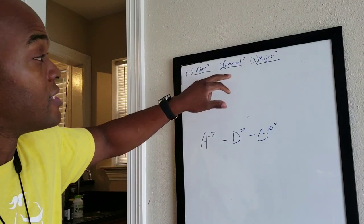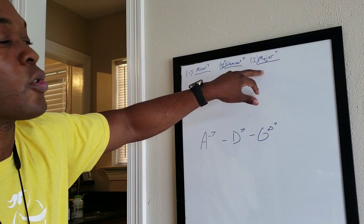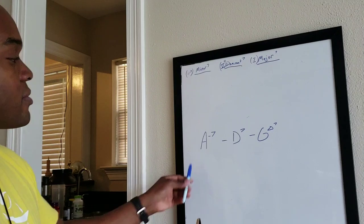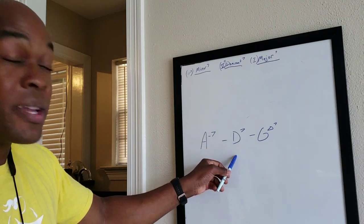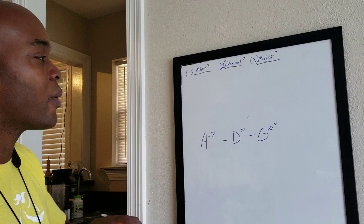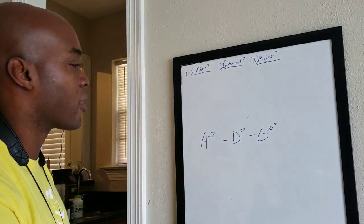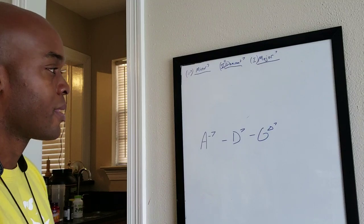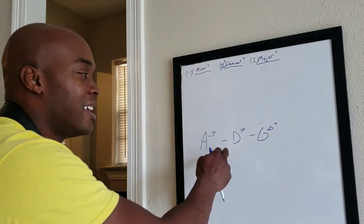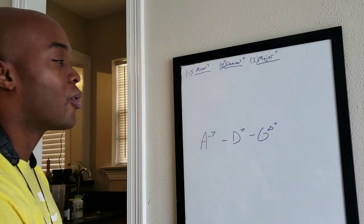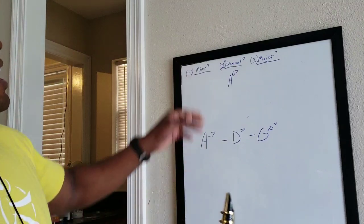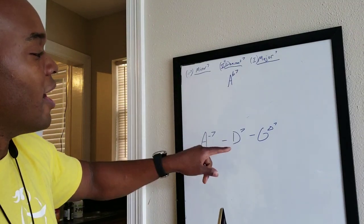I have it written up here on the board: a minor seven chord going to a dominant seven going to a major seven chord. Here it's written in the key of G — A minor seven going to D dominant seven going to G major seven. The most common substitution, which a lot of you probably already know, is the tritone substitution. All it means is you go from the dominant chord to a chord a tritone above — so in D, that's G-sharp or A-flat. You play that A-flat seven chord in lieu of the D7.